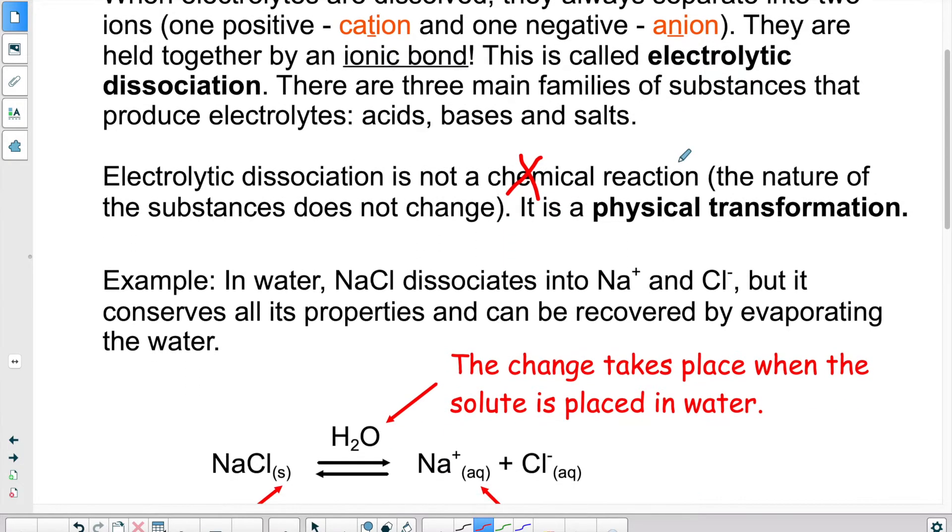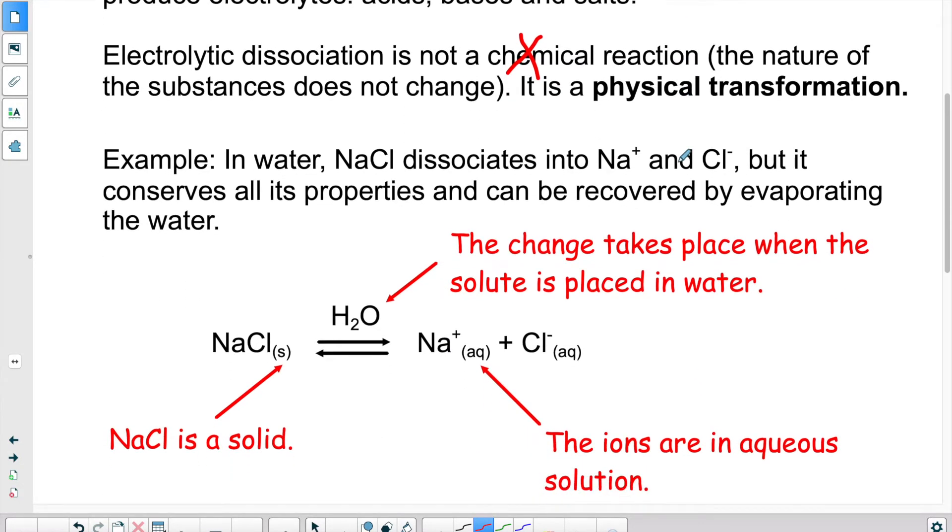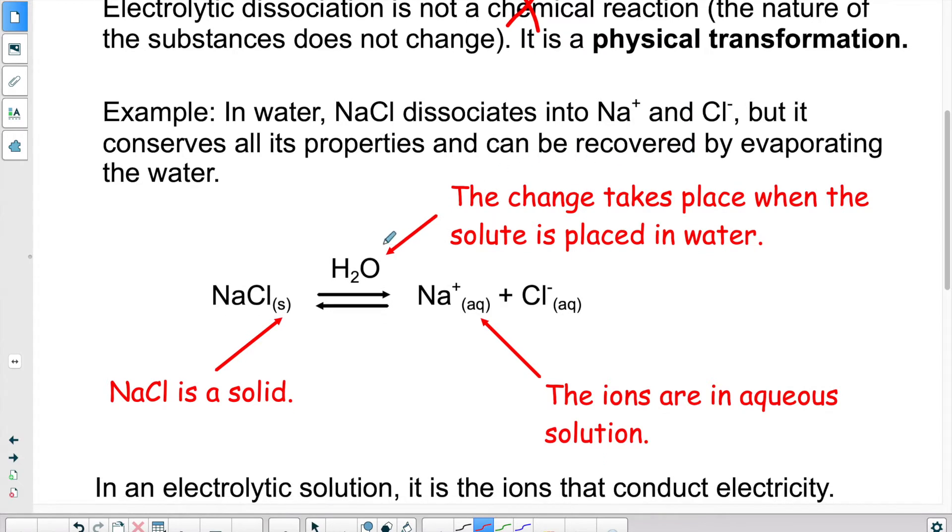So we have an example here. We have NaCl, which is table salt. Table salt, when we put it in water, will dissociate into Na plus and Cl minus. It's two ions. If you don't remember why it's plus and minus, you're going to have to go back to a previous lesson where I talk about ions and what charge they carry when they separate from one another.